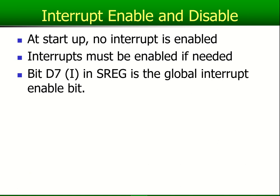At startup, no interrupt will be enabled — so if you start with a normal program, all interrupts are disabled and you cannot get interrupted. Interrupts must be enabled individually, whatever is needed. Bit number seven (D7), which is the I-bit in the status register, is the global interrupt enable bit — like a main switch in the house. If that main bit I is zero, the global interrupt is off and nothing will work. So if you want anything to work, this bit must be a one. This will be continued in video number two to ensure this video doesn't become too long. Thank you.